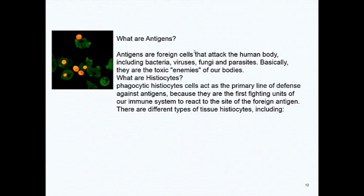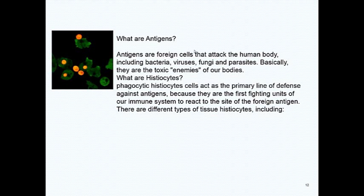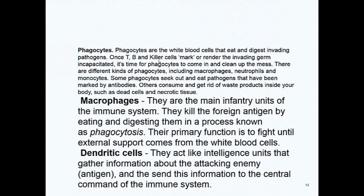What are antigens? Antigens are foreign cells that attack the human body, including bacteria, viruses, fungi, and parasites — basically the toxic enemies of our bodies. Histocytes, or phagocytic histocyte cells, act as the primary line of defense against antigens, because they are the fighting units of our immune system and react to the site of foreign antigens. There are several different types of histocytes, including phagocytes.